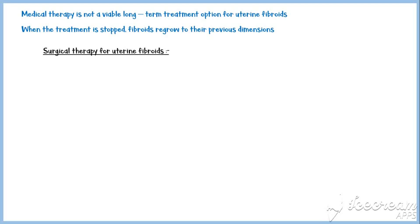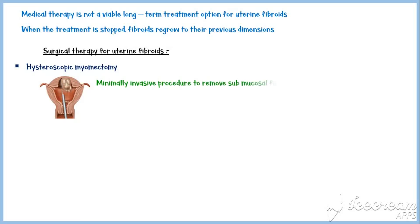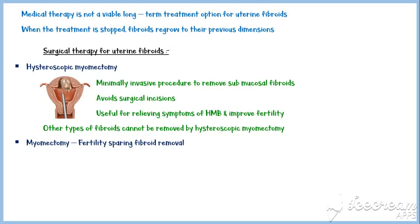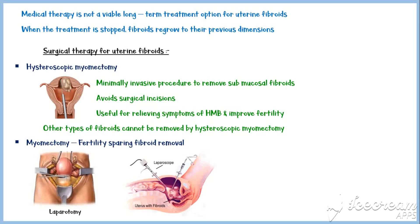Common surgical treatment options include hysteroscopic myomectomy, a minimally invasive procedure to remove submucosal fibroids using a hysteroscope inserted through the vagina. It avoids surgical incisions and is useful for relieving heavy menstrual bleeding and improving fertility. However, other types of fibroids cannot be removed by this method. Another option is myomectomy, an invasive but fertility-sparing fibroid removal procedure, performed via laparotomy or laparoscopic technique. The laparoscopic technique is effective only for smaller and fewer fibroids.